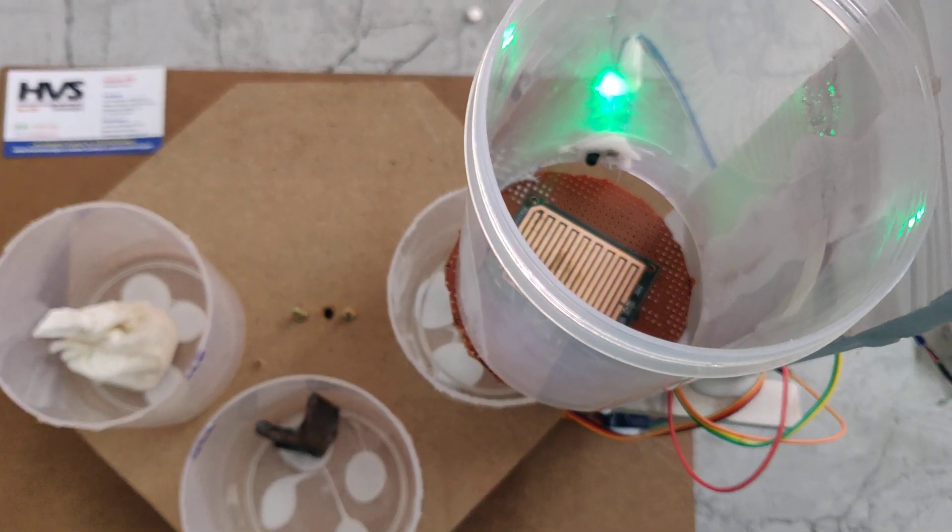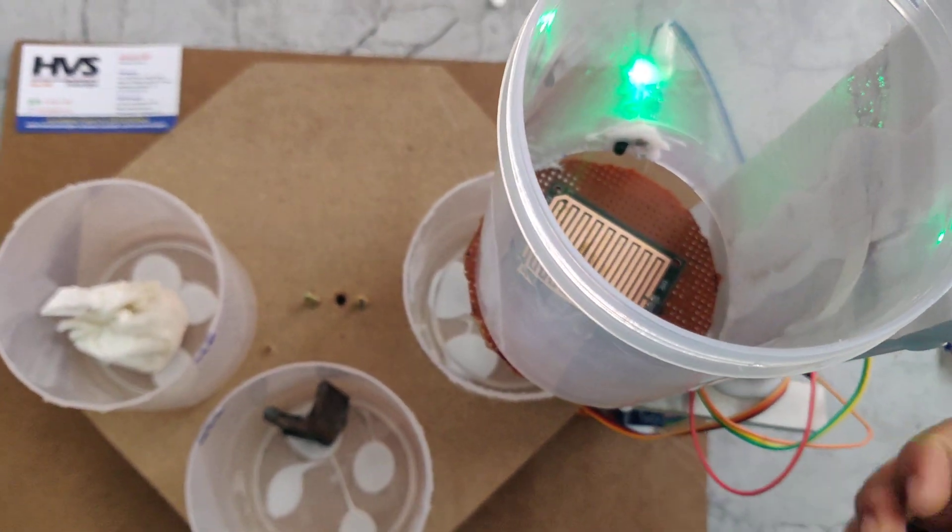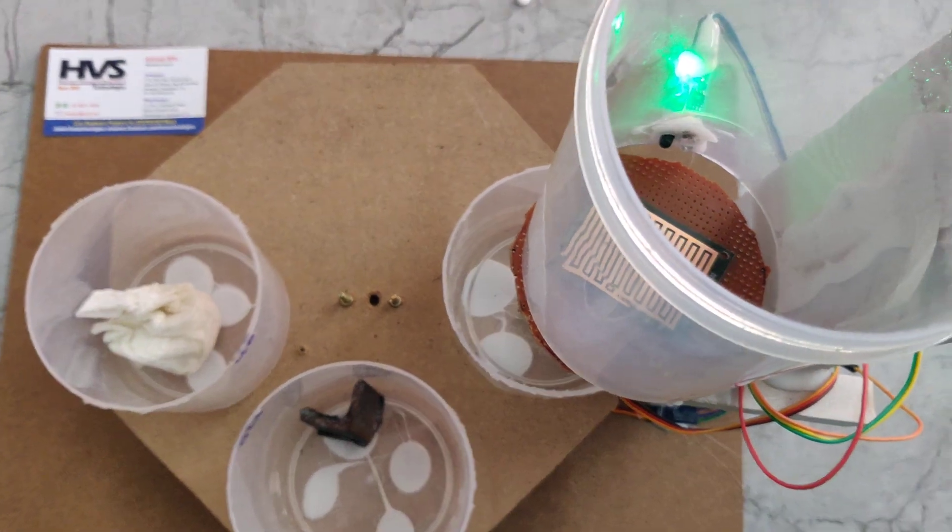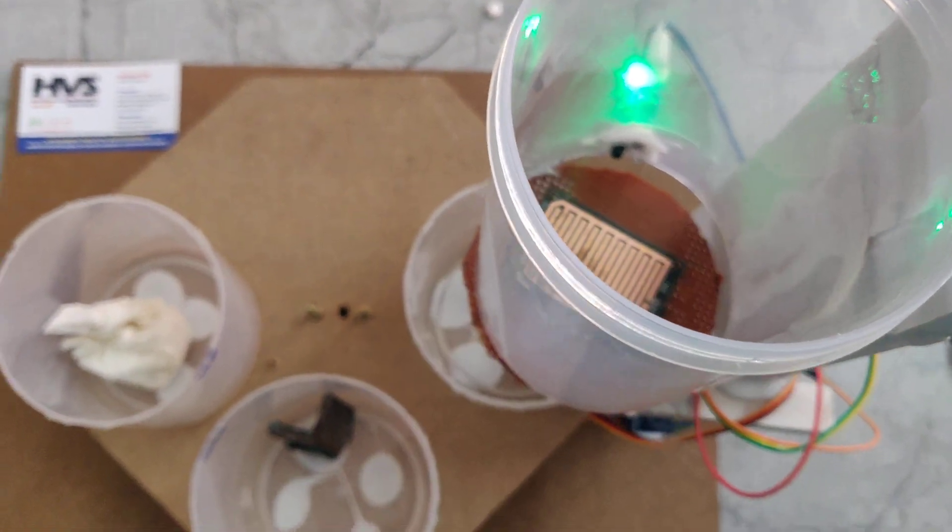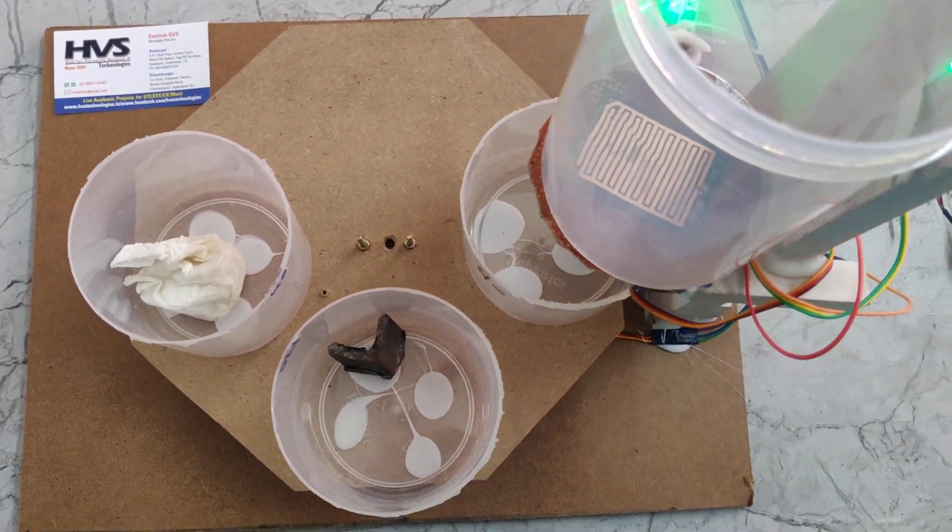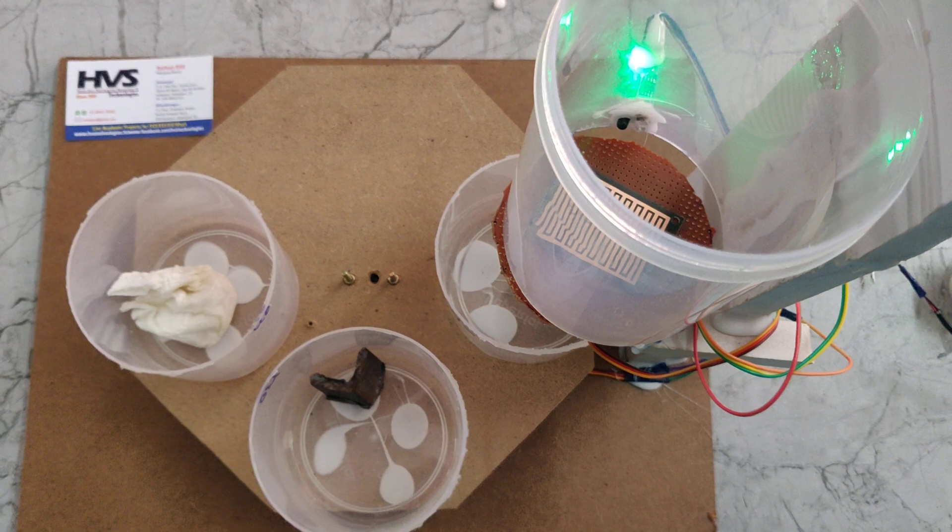If I place only dry waste, then only IR sensor will be detected. That dry waste goes to this box only. In this way, this project works. Thank you for watching.